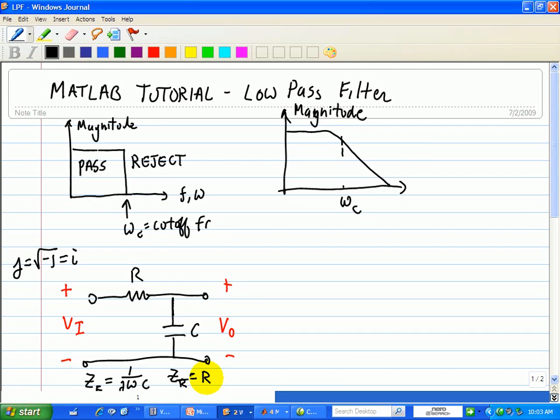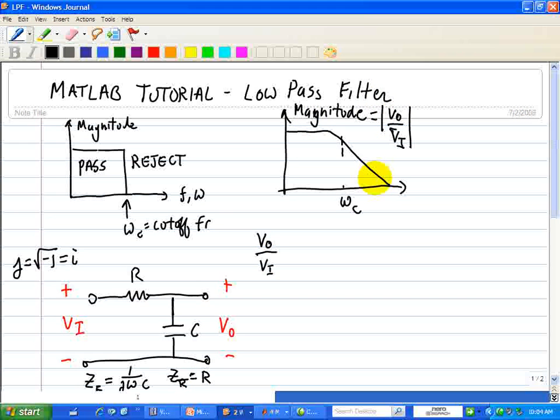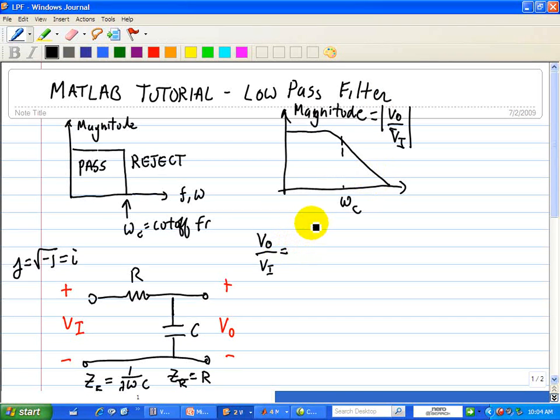Now, using the voltage divider principle, we can find the relationship of VO over VI. And that's what this is, the magnitude of VO over VI. We plot this. This is also called the Bode plot, which I'll demonstrate also in MATLAB. So, this would be 1 over j omega C over R plus 1 over j omega C, using our voltage divider principle. This is Bode plots. It's only for pure sinusoidal signals, and you use the Laplace description for damped sinusoids.